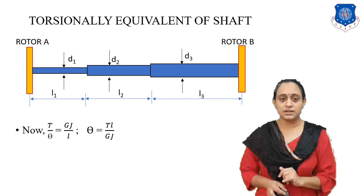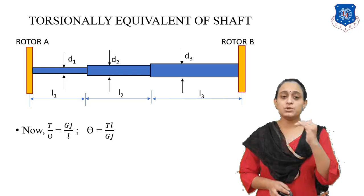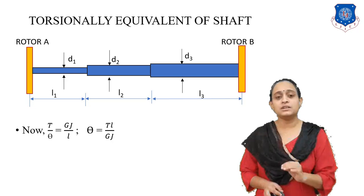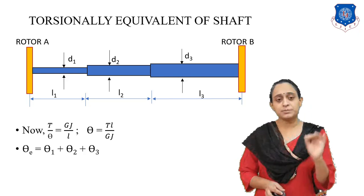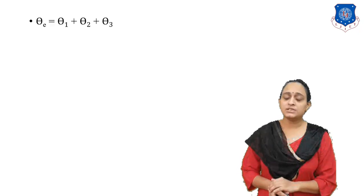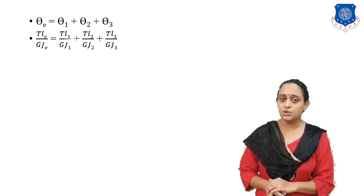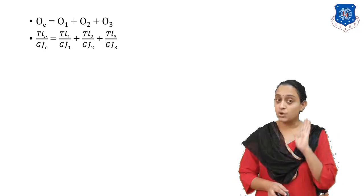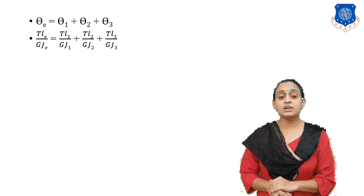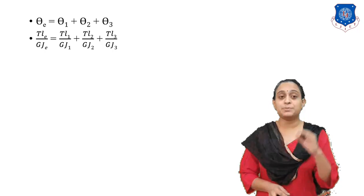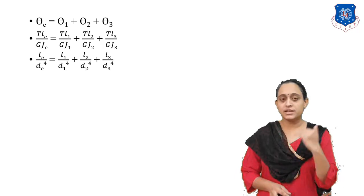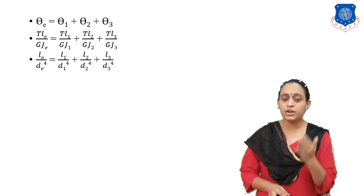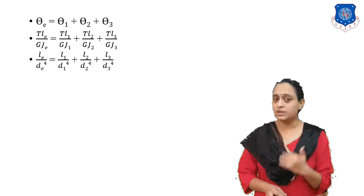The equation is T by theta equals GJ by L, meaning theta equals TL upon GJ. The equivalent angle is: theta_equivalent equals theta1 plus theta2 plus theta3. Torque is similar for all three portions and the polar moment of inertia J equals pi by 32 times D raised to 4. By putting all these values, we finally get: L_E upon D raised to 4 equals L1 upon D1 raised to 4 plus L2 upon D2 raised to 4 plus L3 upon D3 raised to 4.